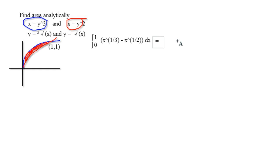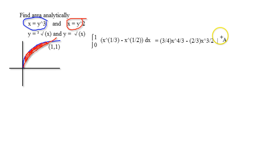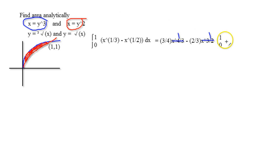My integral is going to be 3/4 x to the 4/3 minus 2/3 x to the 3/2, evaluated from 0 to 1. When I plug in 1 and plug in 0, those just turn into a bunch of 1s, so this essentially becomes 3/4 minus 2/3, which equals 1/12.